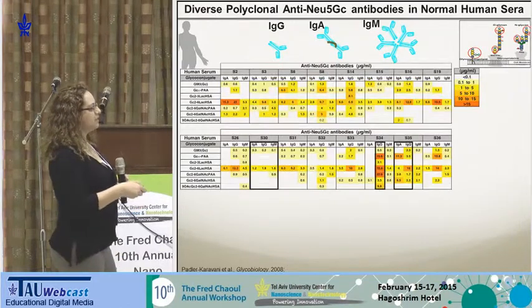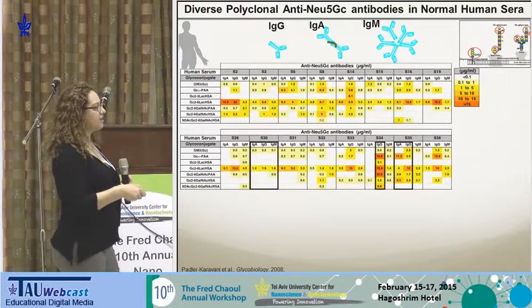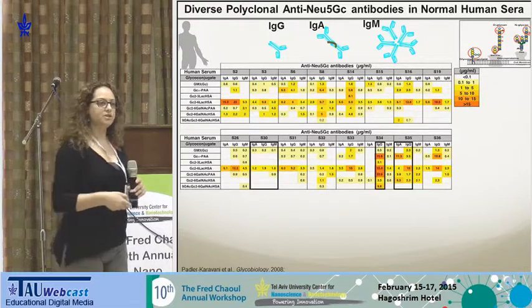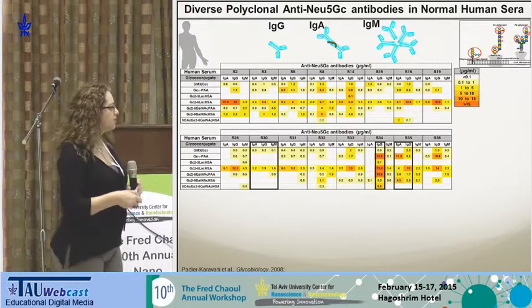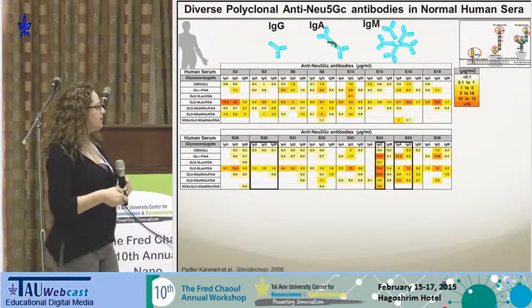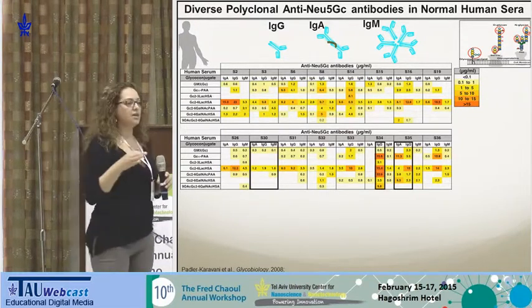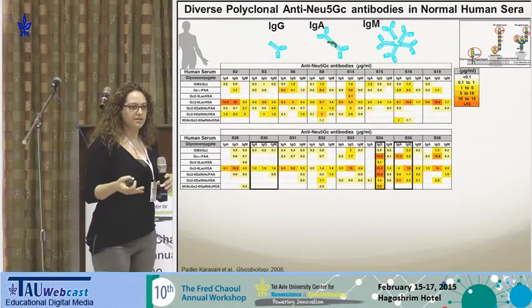Some individuals have high IgGs, some individuals have both IgGs and IgAs, and some individuals have very low reactivity.